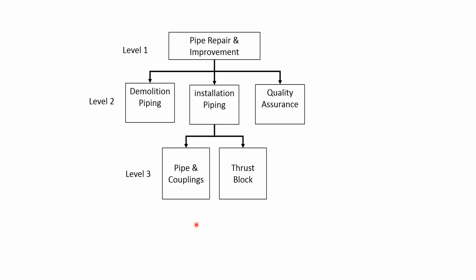On the screen we have our demonstration WBS. This is a WBS for a pipe repair and improvement project listed on level 1. As you can see on the WBS, the project has three major WBS elements or deliverables: Demolition Piping, Installation Piping, and Quality Assurance.